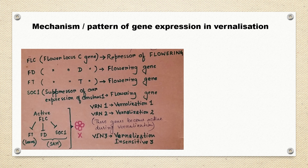SOC1, which is Suppressor of Overexpression of Constants 1, is also a flowering gene. FLC or Flowering Locus C gene is a repressor of flowering and it is highly expressed in non-vernalized shoot apical meristem.